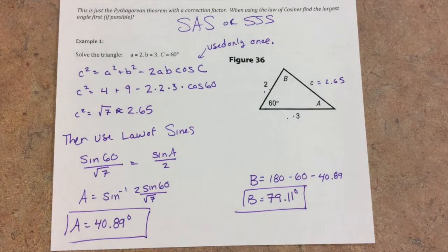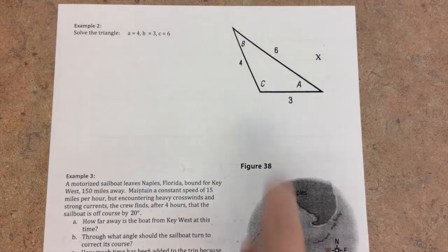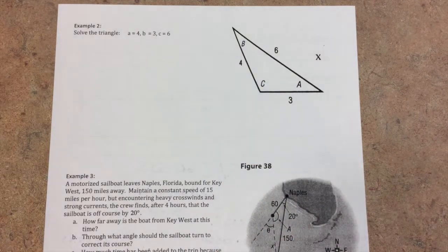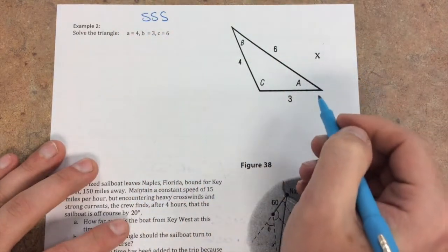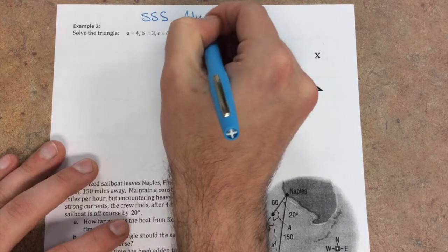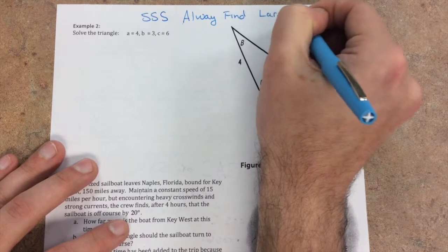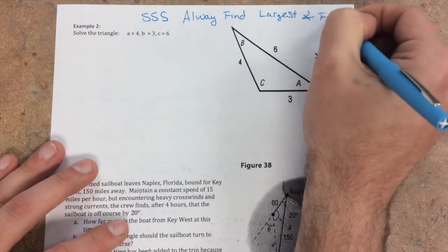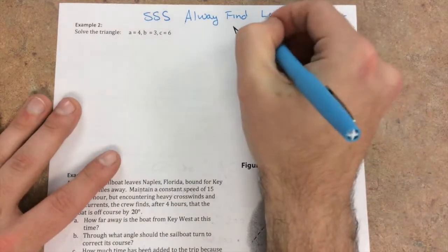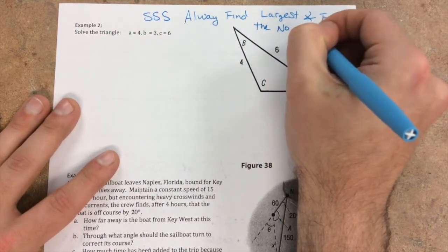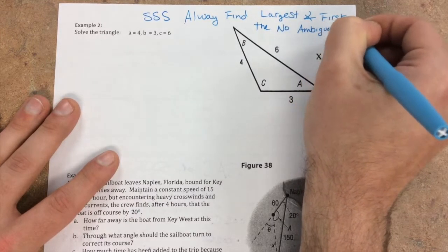Let's flip it over, and we have one more example. With example two, it says solve the triangle, which is pictured right here, and we're given three sides. So with side, side, side, always find largest angle first. If you find the largest angle first, then no ambiguous case.